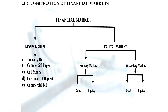The money market is for short-term income. The capital market is for long-term investment.